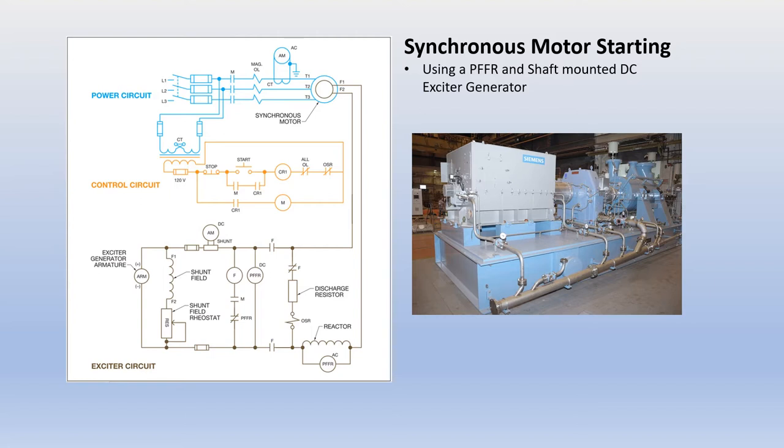If the DC field is overexcited, the additional lines of flux created by the DC field will cause the motor to generate additional CEMF back on the line, creating a leading power factor. These motors are used in situations or loads like large piston compressor motors. When an industrial installation has a demand for compressed air, the motor provides the necessary horsepower to drive the load at unity power factor. When there is no longer a demand for horsepower, the motor is unloaded and continues to run with a leading power factor to compensate for the facility power factor.